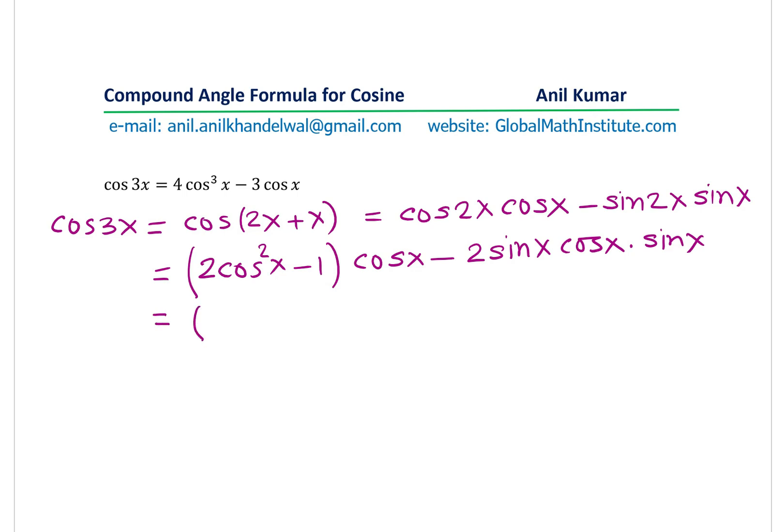And then, what we get here is, we can open this bracket. So we get 2 cos³ x minus cos x. So we have opened the bracket. So I will remove it from here. Here we have 2 sin² x, right? So we have 2 sin² x times cos x. So we will rewrite.